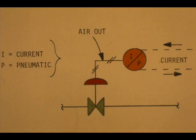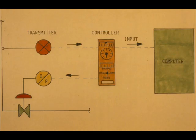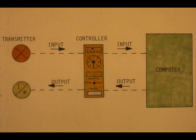The I to P transducer converts the electronic controller output, which is current, into a pneumatic signal that is compatible with the control valve. In addition, the controller and or the transmitter may provide information to a computer, and the computer can supply the controller with information.